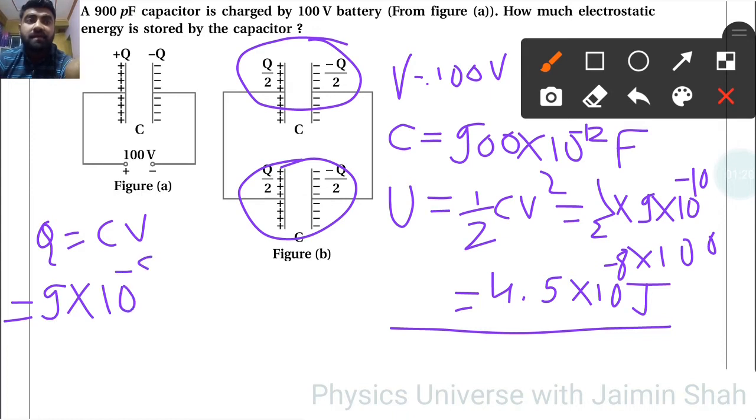Q dash equals Q by 2, so half charge is 4.5 into 10 raise to minus 8 coulombs. Now new energy, that formula is half Q into V, the second formula of potential energy of the capacitor.